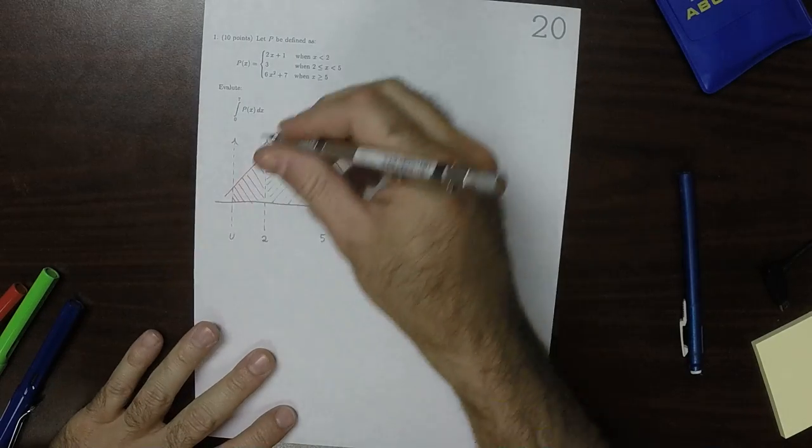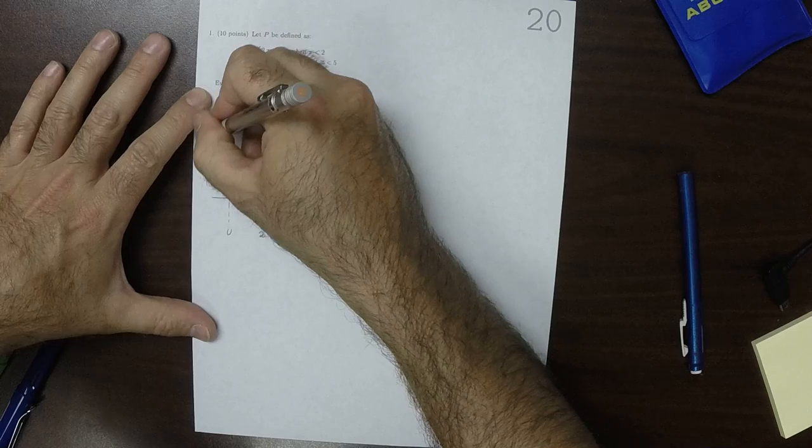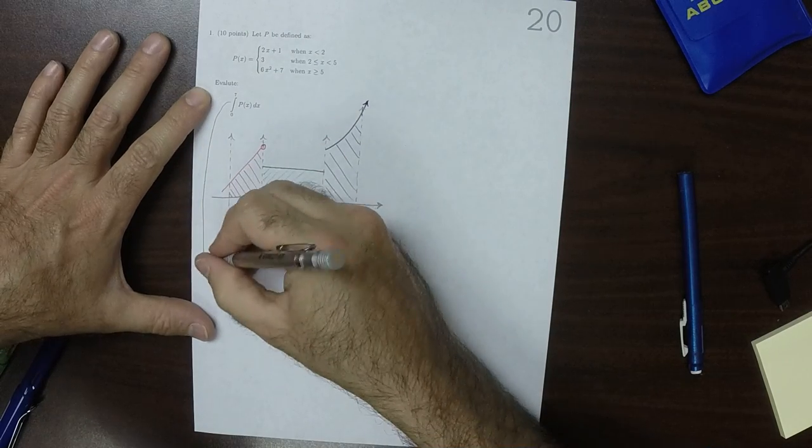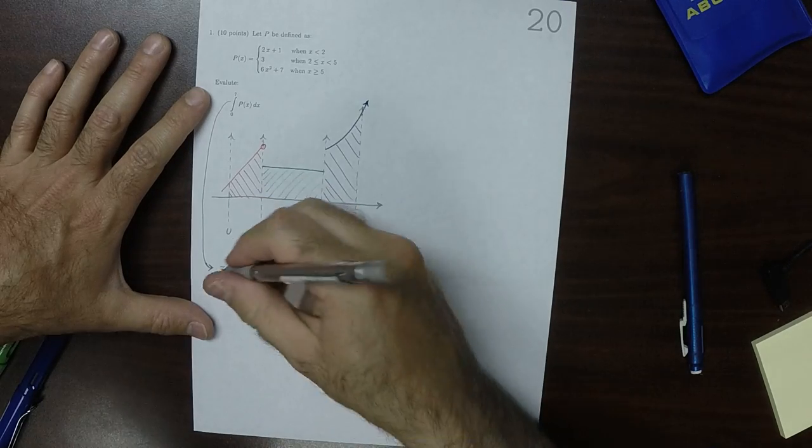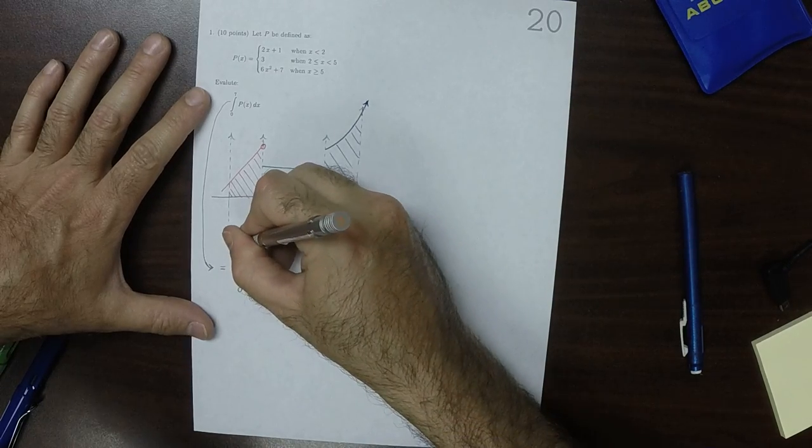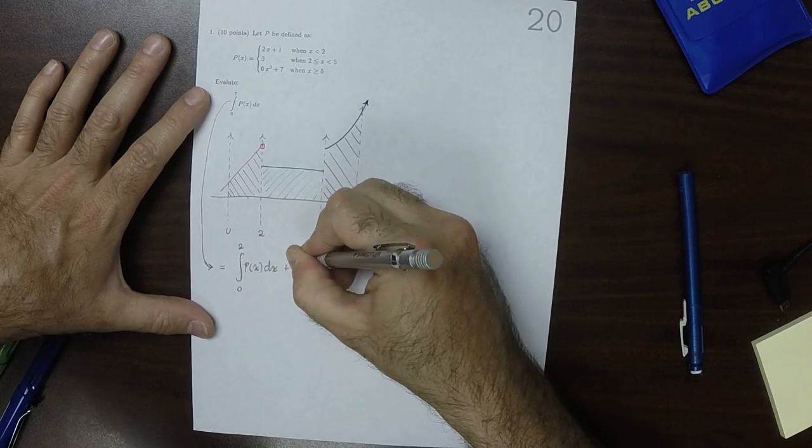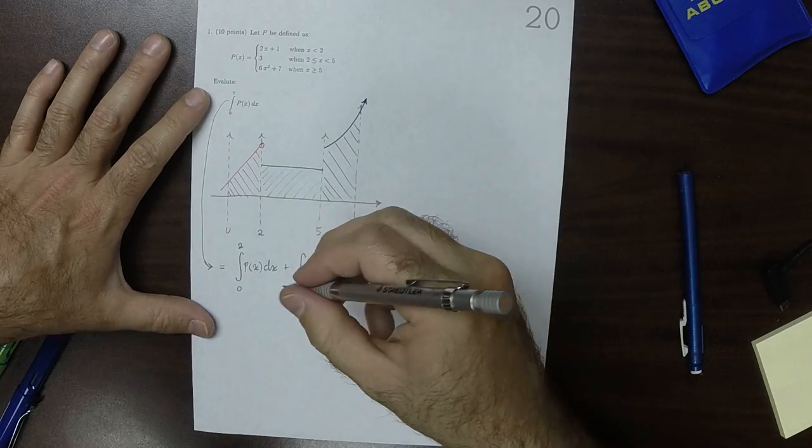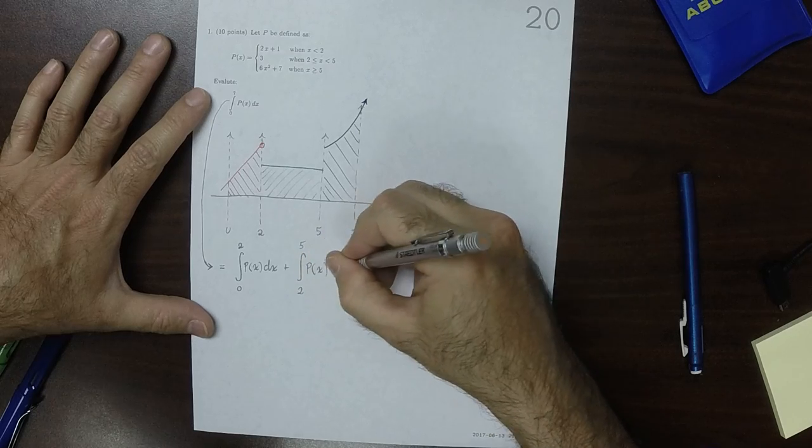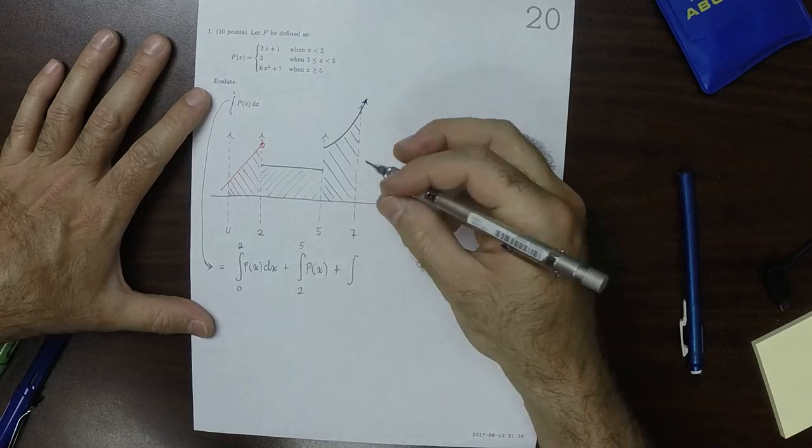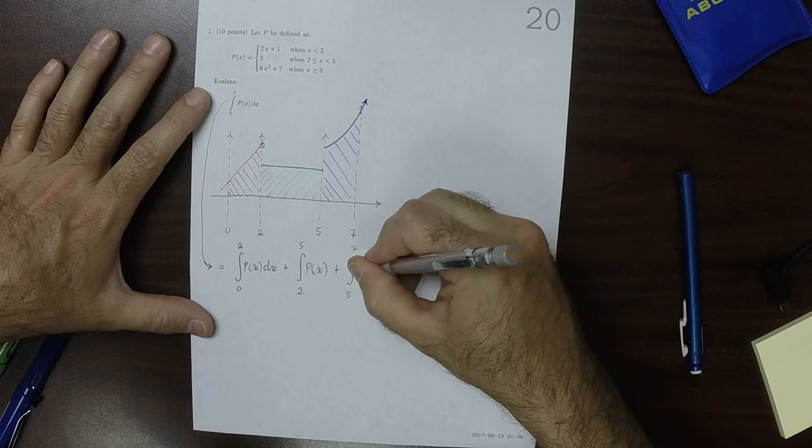So that means that we can take the requested integral and we can actually break it into three pieces. So on the one hand, we've got the integral from 0 to 2 of P of X, plus the integral from 2 to 5 of P of X, plus the integral from 5 to 7 of P of X.